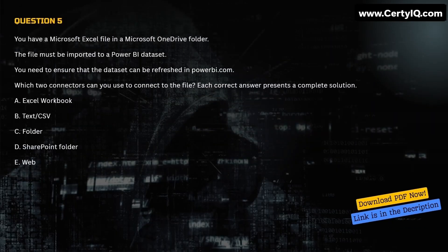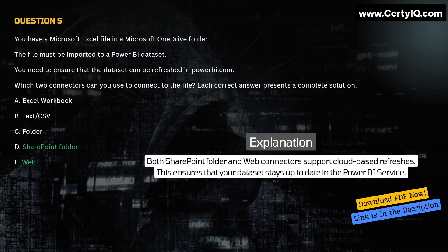Question 5. You have a Microsoft Excel file in a Microsoft OneDrive folder. The file must be imported to a Power BI dataset. You need to ensure that the dataset can be refreshed in PowerBI.com. Which two connectors can you use to connect to the file? Each correct answer presents a complete solution. A. Excel workbook. B. Text/CSV. C. Folder. D. SharePoint folder. E. Web. Correct answer is D and E. Explanation: Both SharePoint folder and Web connector support cloud-based refreshes. This ensures that your dataset stays up-to-date in the Power BI service.